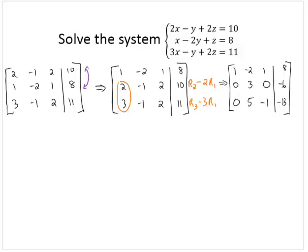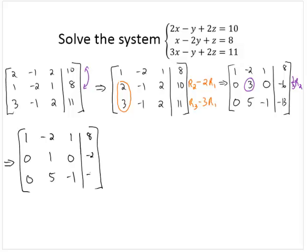So now I have the 1 in the first element and 0's below it. Now I'm going to focus on the 3. I need to make the 3 a 1. So I'll multiply this row by 1 third and leave the other rows alone. So that gives me 1, negative 2, 1, 8. 0, 1, 0, negative 2. 0, 5, negative 1, negative 13.